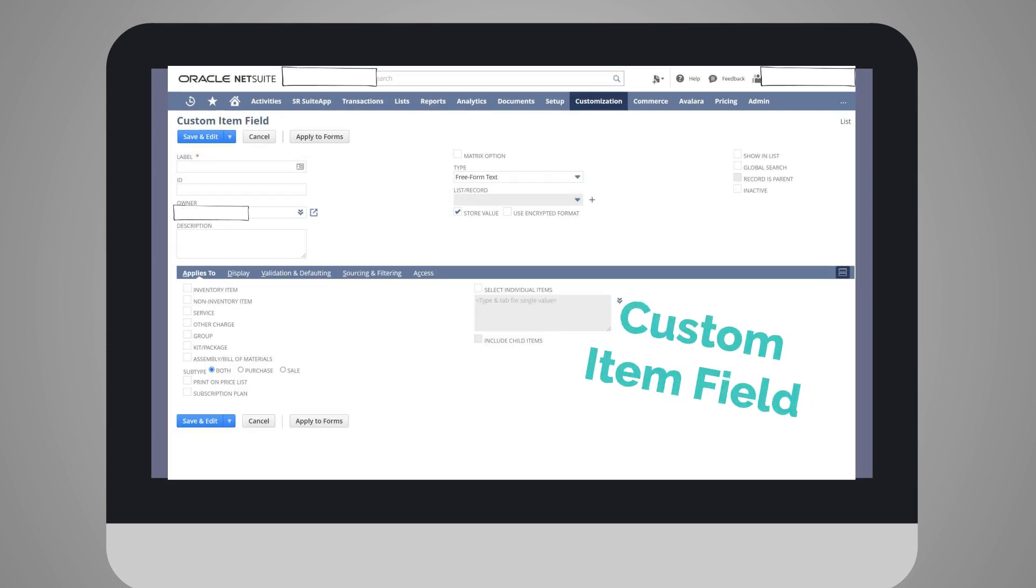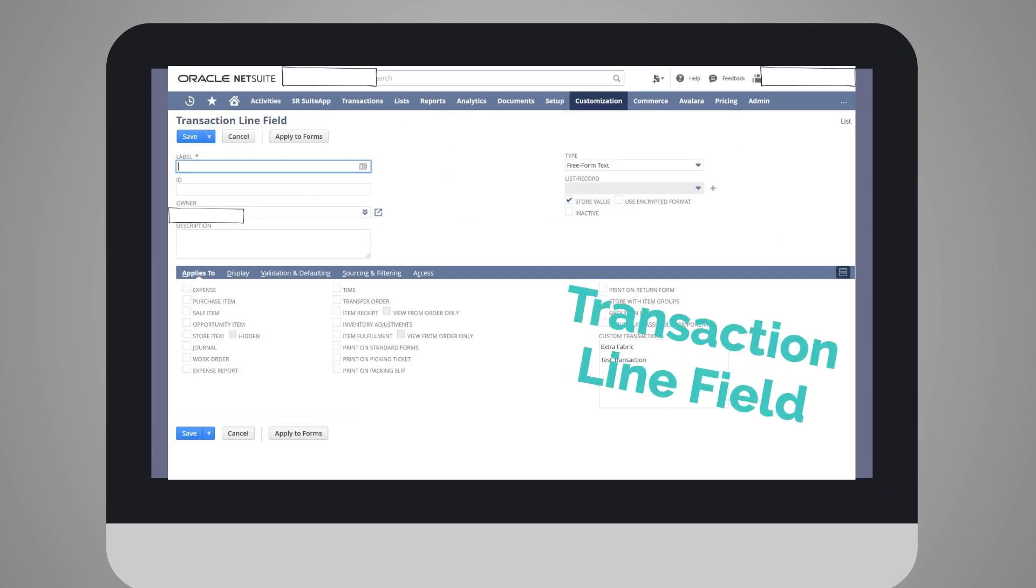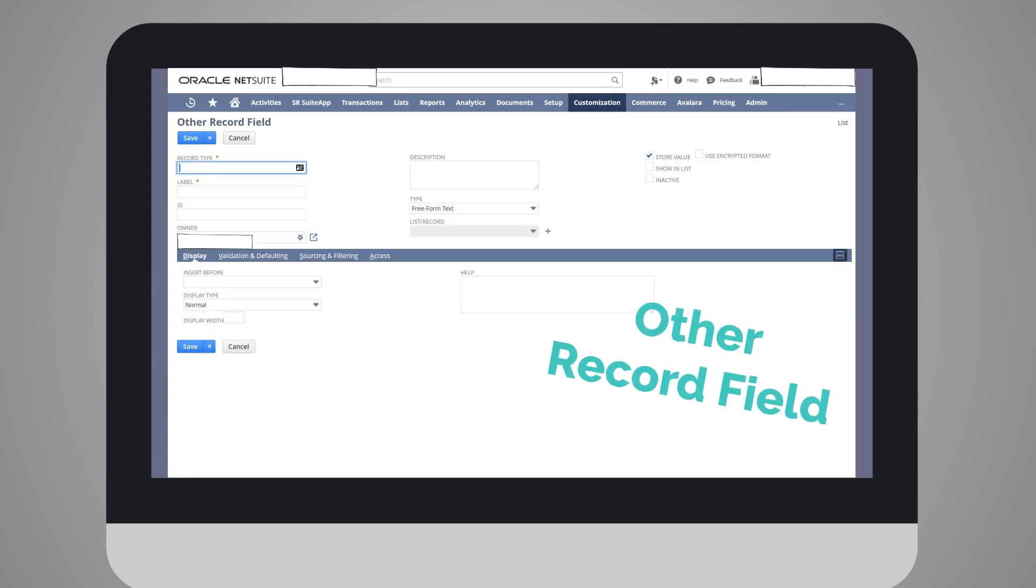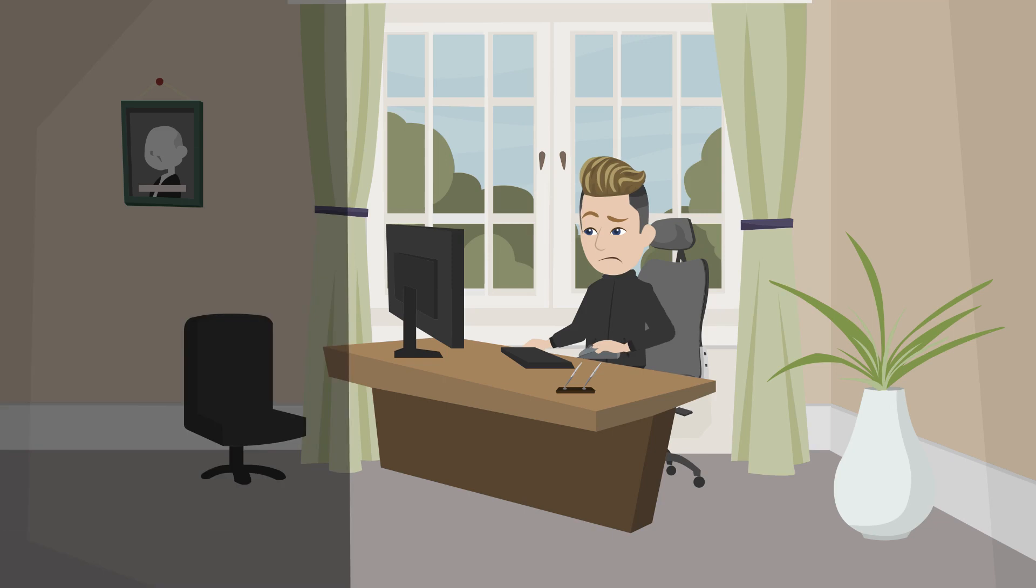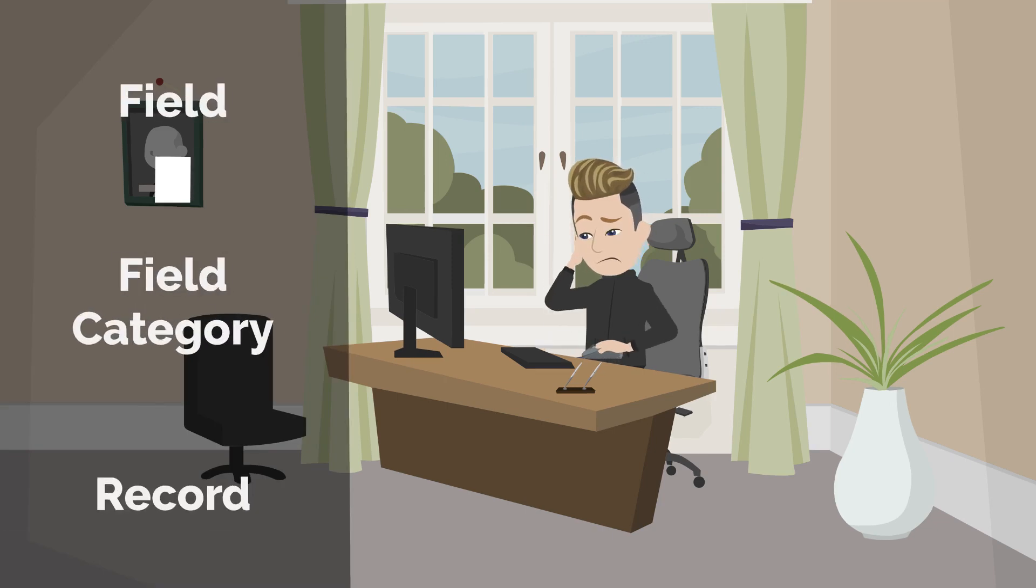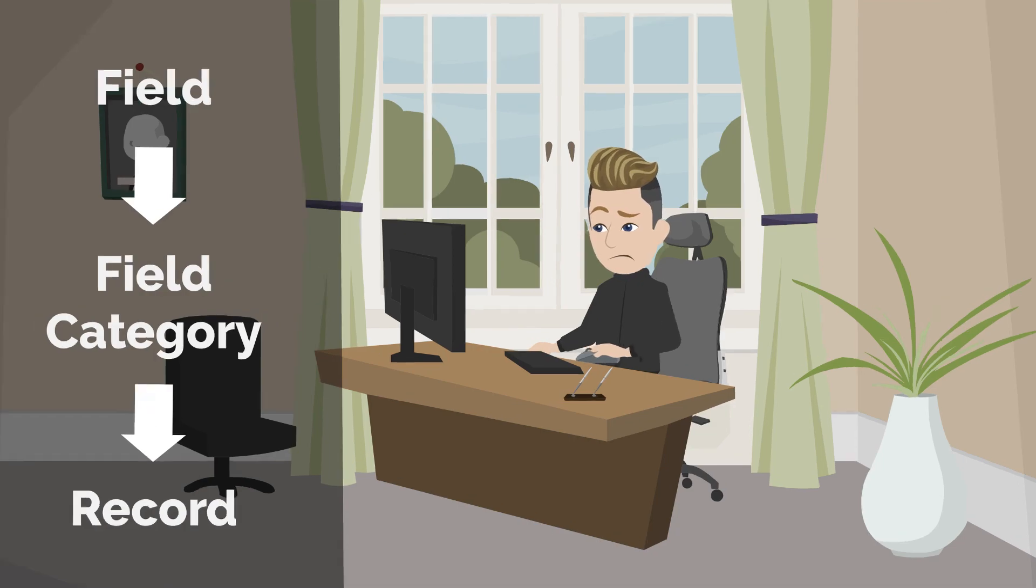However, if you compared the pages where you create new fields in each of these categories, you would see that they are overall quite similar. So why do we need the different categories? Essentially, the field categories connect the fields that you are creating with the records and transactions you want those fields to appear on.